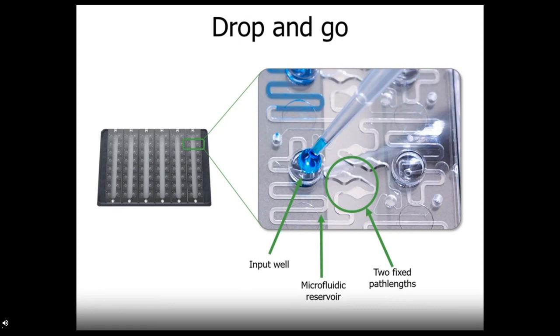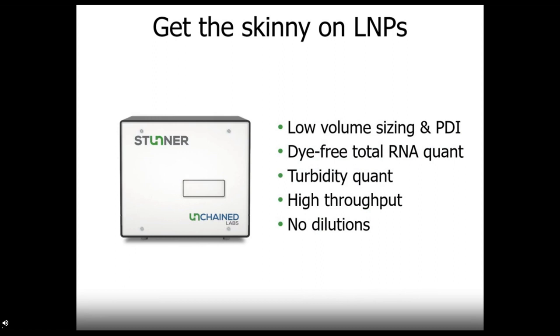Now, how does Stunner do this? Simply add in two microliters into the input well, and it's pulled into the microfluidic reservoir. At this step, the sample can sit for up to two hours before reading, with no evaporation. After the plate is loaded into the instrument, the circuit is read first when empty, and that will remove any absorbance contribution from the plastic. And then, a pump applies a small vacuum, which moves the sample into the microcuvettes to be read. Because the circuit has fixed path lengths, it can make very precise and accurate reads.